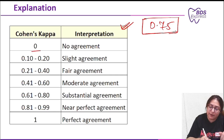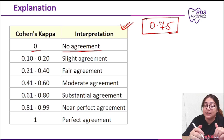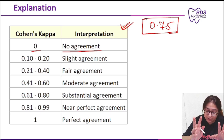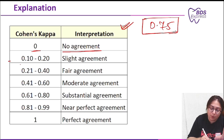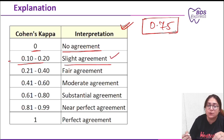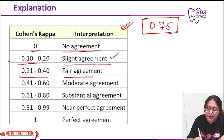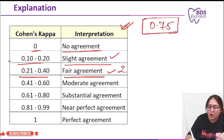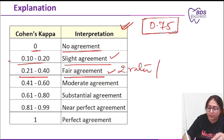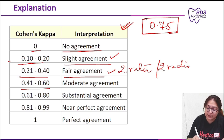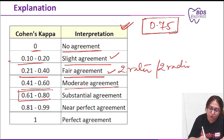If the kappa value is 0, there is no agreement between two raters. Here, the two raters are radiologists. 0.1 to 0.2 is slight agreement. 0.21 to 0.40 is fair agreement. 0.41 to 0.60 is moderate agreement. 0.61 to 0.80 is substantial agreement.